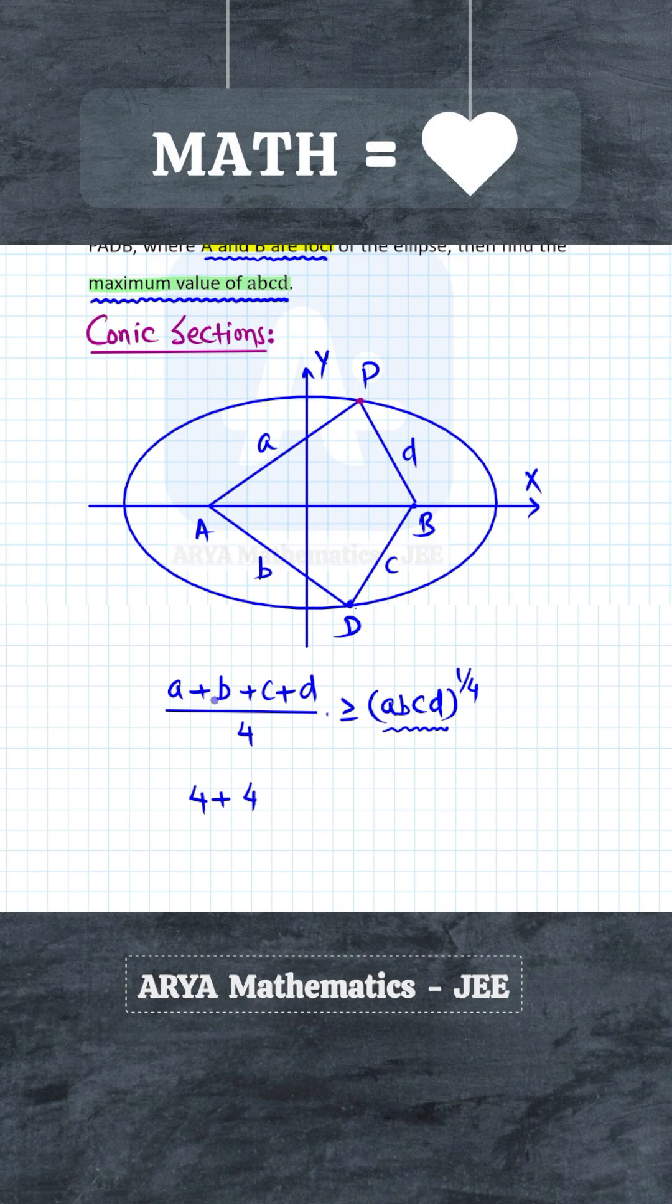So in place of a + d, we can write 4. Similarly, b + c will be 4. This divided by 4 must be greater than or equal to (abcd)^(1/4).